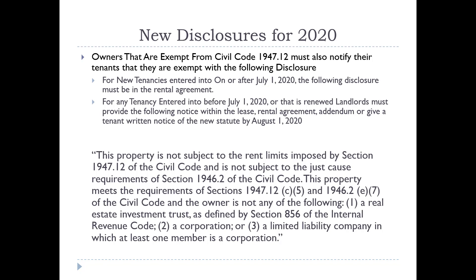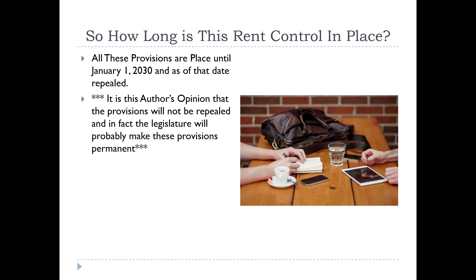For exempt owners, you also get a disclosure requirement — basically telling the tenants that you are exempt and certifying that you're exempt under the statute. For new tenancies entered into on or after July 1st, 2020, you have to put the disclosure in the rental agreement. For tenancies entered before July 1st, 2020, you have to provide notice to your tenant by August 1st, 2020, or put it in an addendum or renewal of the rental agreement. All these provisions are in place until July 1st, 2030, at which date they are repealed.